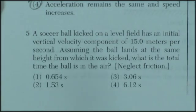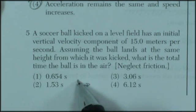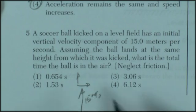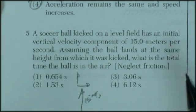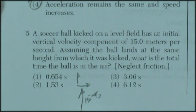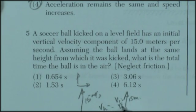Question five. A soccer ball kicked on a level field has an initial vertical velocity. Horizontal and vertical. So the vertical component is going to be 15 meters per second. Assuming the ball lands at the same height from which it was kicked, what's the total time the ball is in the air? We don't care what the horizontal velocity is because that just determines how far it goes. It's going to go up at 15 meters per second. It'll eventually stop when it reaches the top. And then it's going to come down.